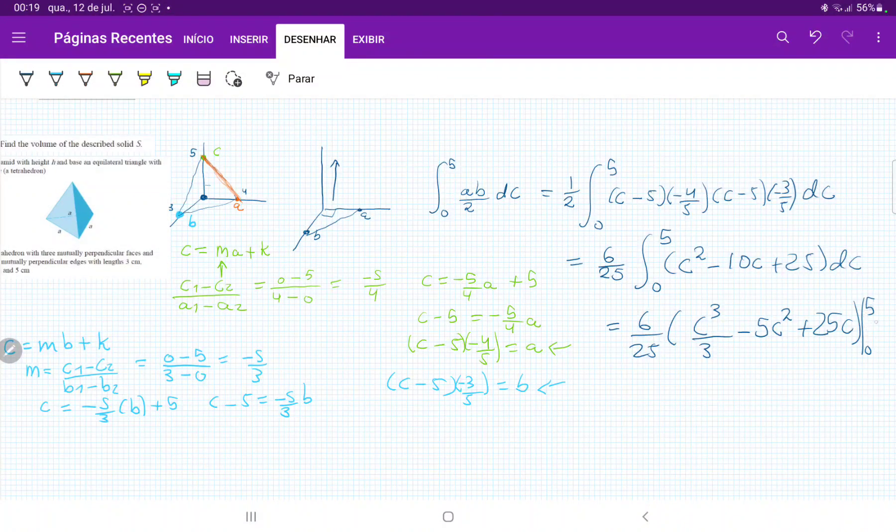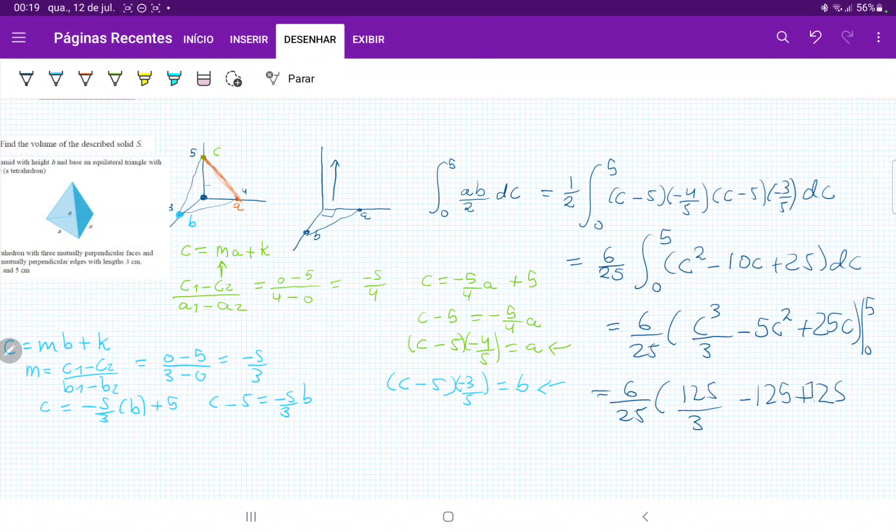So then when we plug in the upper boundary, 5, because 0 is going to disappear, we have 6 over 25 times 125 over 3 minus 5 times 5 squared is minus 125, and then plus 25 times 5 is 125. These two cancel out. So basically we're going to be left with 6 times 125 divided by 25 divided by 3, which equals 10.